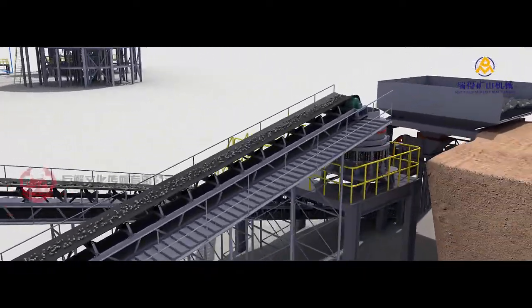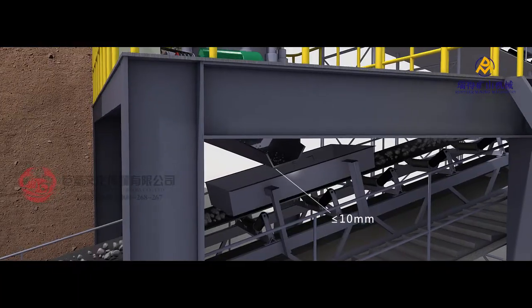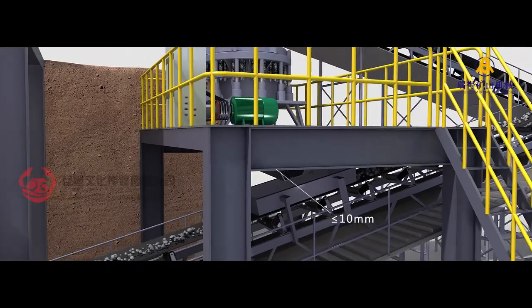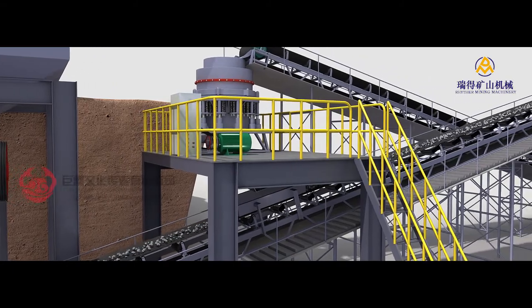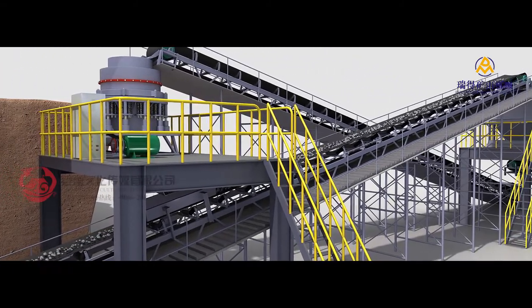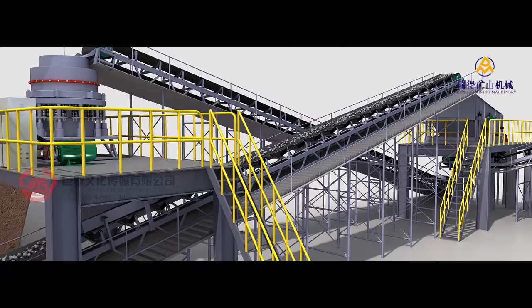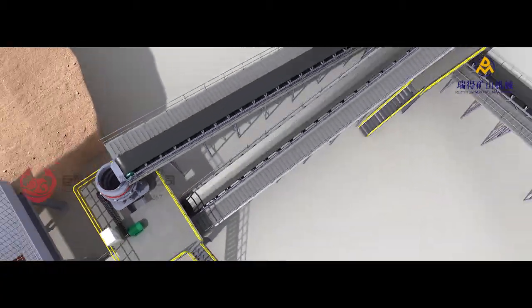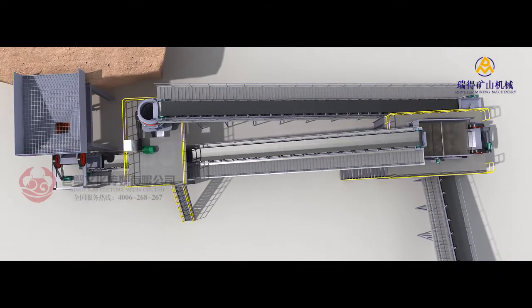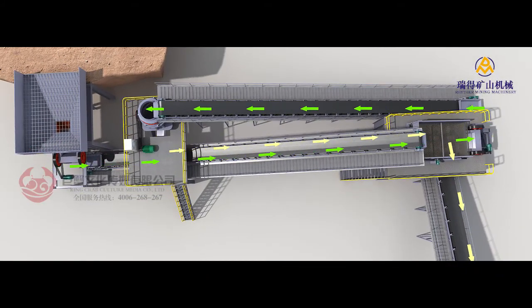The products will be fed to belt conveyor between single stage crusher and vibrating screen by trough, and then fed into vibrating screen for screening along with products crushed by single stage crusher. This crushing process boasts of relatively low cost, simple configuration, and small particle size of products, which allow it to be extensively used by mines at the moment.